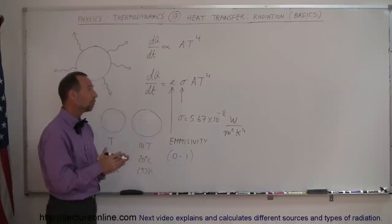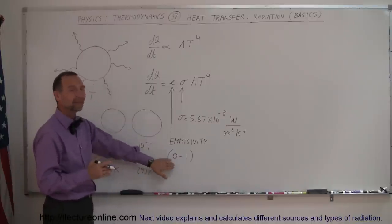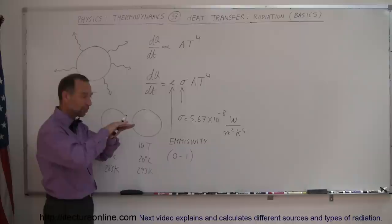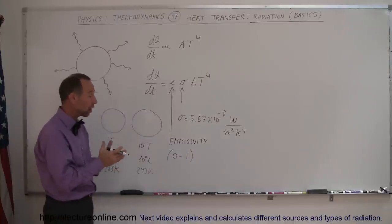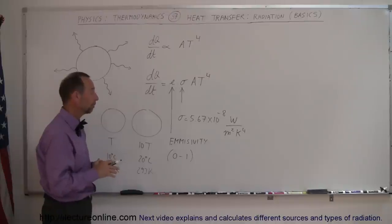For example, aluminum foil has an emissivity of less than 0.1. In other words, if you put aluminum foil around an object, it is less likely to lose heat through radiation. So, if you want to keep food hot and you wrap it in aluminum foil, it will keep hot a lot longer than if you didn't wrap it in aluminum foil.